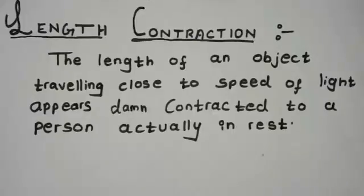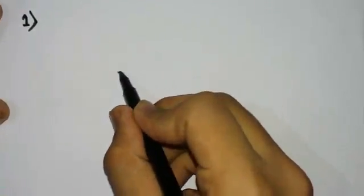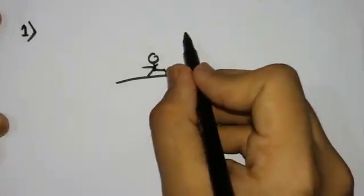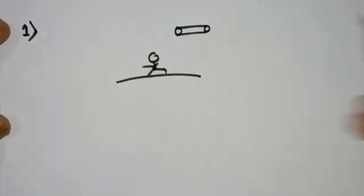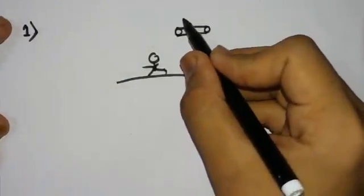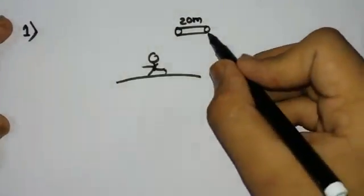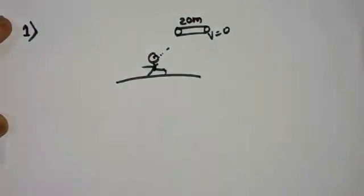Now as usual, let's take an example. Let us take the first scenario where this is the land and a person on the land is at rest. What he sees is a rod at zero velocity, simply floating in the air, having length 20 meters. So the rod of 20 meters with zero velocity, he is observing the rod actually floating in the air having no velocity.